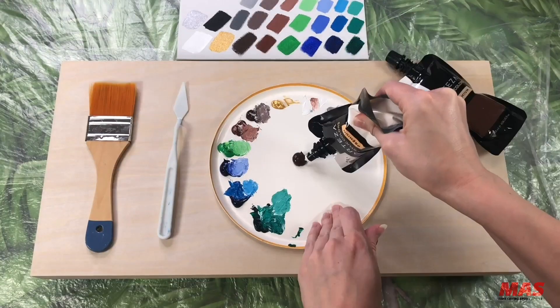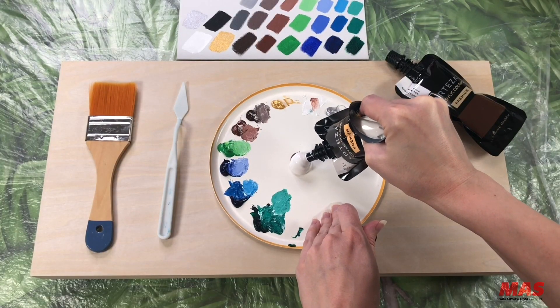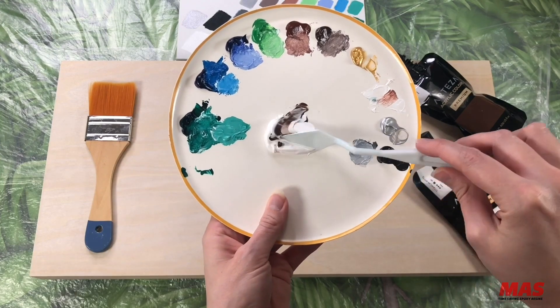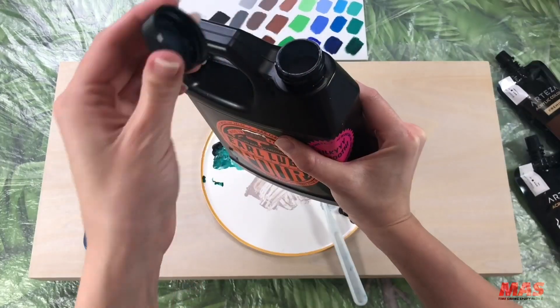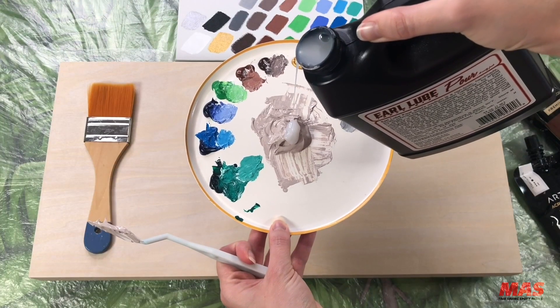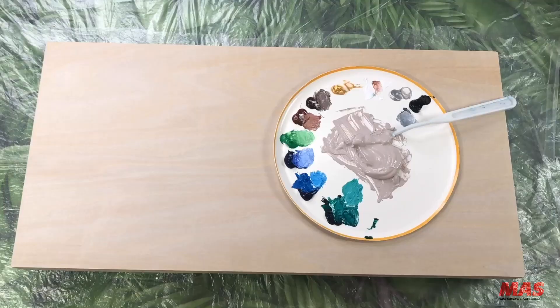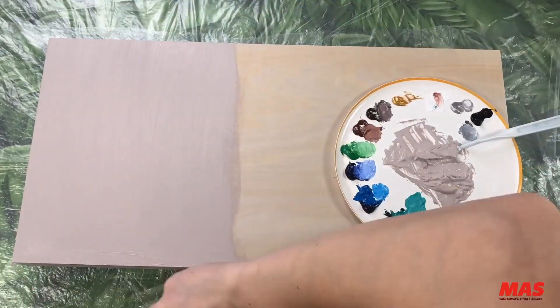Let's mix up our first color. For me it's going to be a sandy brown. Use a palette knife for easy mixing. I then added pour fluid medium to help extend the working time of my paint and also soften the paint brush strokes.